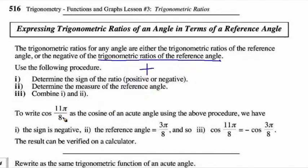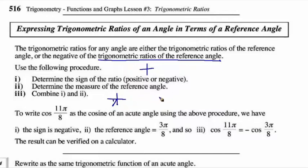To write cos of 11π/8 as the cosine of an acute angle: where is 11π/8? We have 8π/8 which is one full π, and then 3π/8 more, making it so that it's in the third quadrant. We have a reference angle of 3π/8. So cos of 11π/8 is going to be equal to negative cosine of that reference angle: cos(11π/8) = −cos(3π/8).